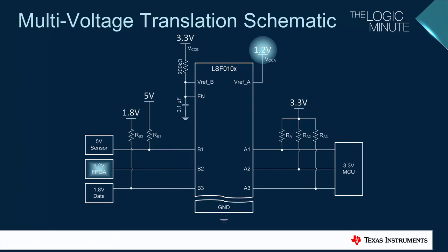The value of 1.2 volts will be the threshold value that controls the LSF device for all channels. For example, on the 5-volt sensor line, when the B-1 input is forced to less than 1.2 volts by the sensor, the LSF device will conduct and allow the sensor to drive the MCU's input low.